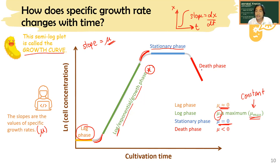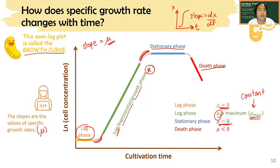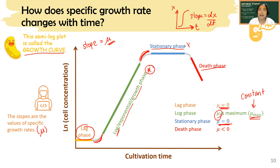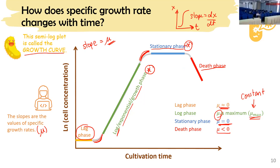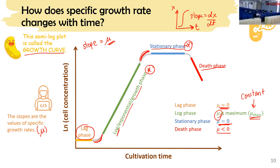The last phase is the death phase. Most fermentation studies don't really do much on the death phase unless you want to study the death mechanism or death kinetics of the cells. Most studies will stop at the stationary phase. In the death phase, μ is less than zero — μ is negative — which is understandable because the slope is negative. That is what a general growth curve looks like.